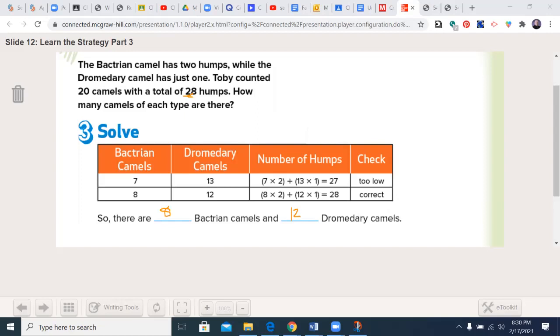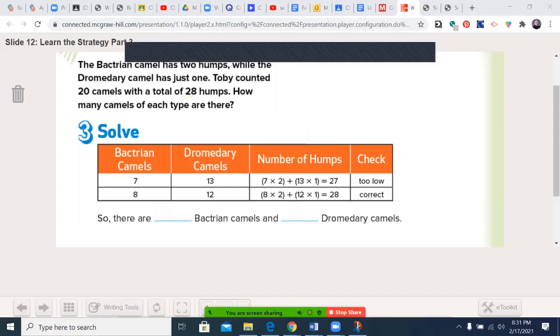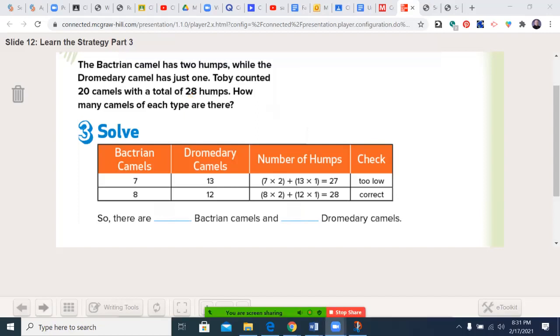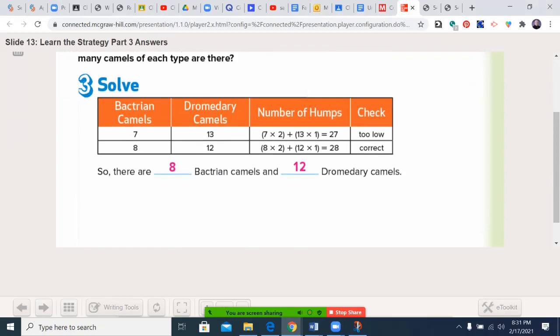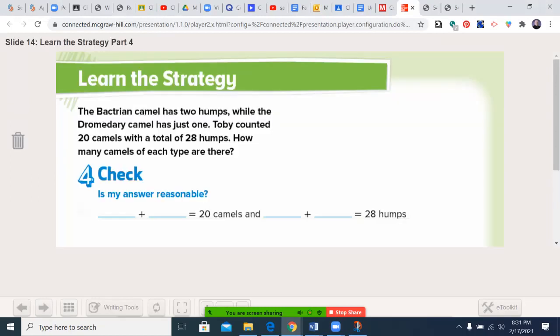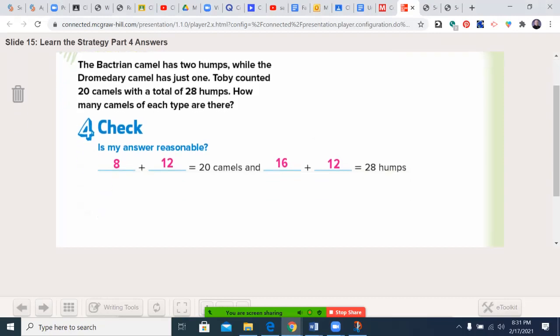So we have eight Bactrian camels and 12 dromedary camels. Let's go ahead and write that in. We should be used to guessing, checking, and revising. We've done it with division earlier when we had to figure out which digit to start our quotient with. Our check: eight plus 12 equals 20 camels and 16 plus 12 equals 28 humps.